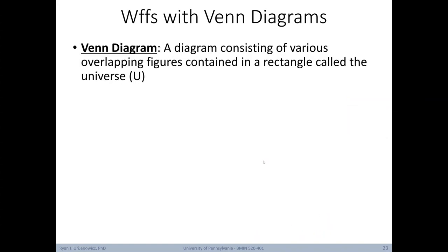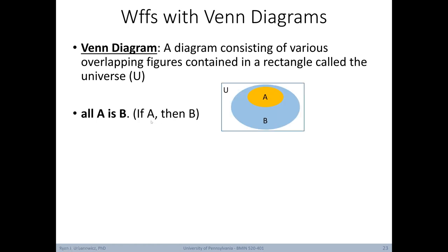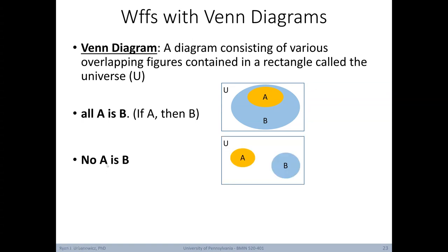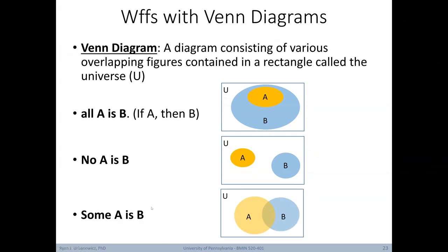Let's take a closer look at well-formed formulas using Venn diagrams — diagrams of overlapping figures contained in a rectangle representing the universe. 'All A is B' illustrates that everything in A is also in B, so A is subsumed by B within universe U. 'No A is B' shows A and B are totally separate with no overlap. 'Some A is B' shows an overlap, but not a complete subsumption. Notably, for 'All A is B,' if something is in A, it's also in B.